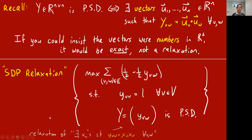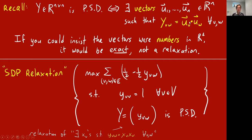Looking back at this, the SDP condition is a relaxation of the goal that there should exist numbers xv such that yvw equals xv·xw. If we could insist that these vectors be one-dimensional, i.e. numbers, then the PSD condition would be exactly equivalent to what we're shooting for — it would exactly capture the max cut problem. But we cannot solve that program in polynomial time. With this relaxation allowing the uv's to be vectors in a large dimension, it almost looks more complicated, but interestingly we can solve this program in polynomial time.